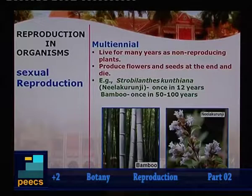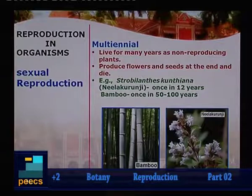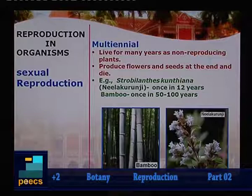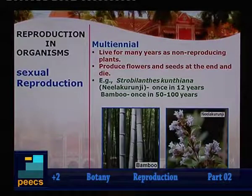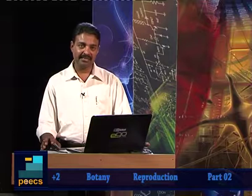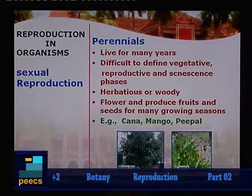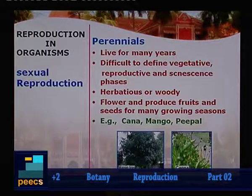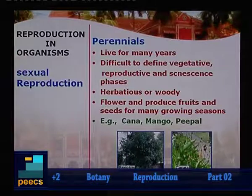The third category is multiennial. They live for many years as non-reproducing plants, remaining in the vegetative phase, then produce flowers and fruits at the end of the life cycle and immediately die. Example: Strobilanthes kunthianus, commonly called neelakurinji, lives for many years but produces flowers and fruits once in 12 years. Bamboo is another example, flowering once in 50 to 100 years. The fourth category is perennial — they live for many years, and it is difficult to define the vegetative, reproductive or senescence phase. They may be herbaceous or woody; flowers and fruits are produced in many growing seasons. Examples include canna, mango, and peepal.